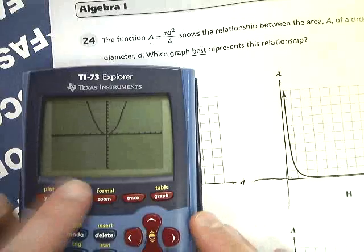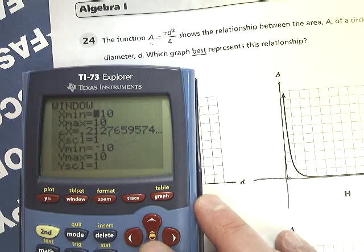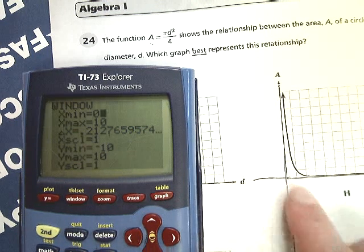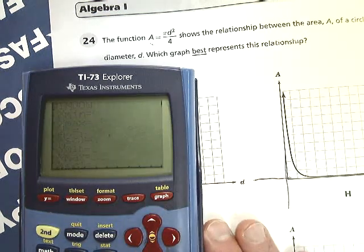But if you don't like how that looks, you could also go into the window and set the window to have an x minimum of 0, and that will lock out, and the y minimum is also 0. And now graph it.